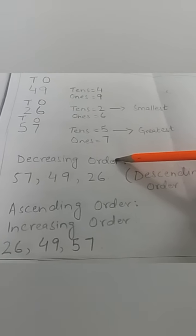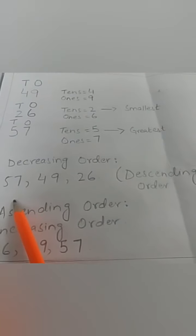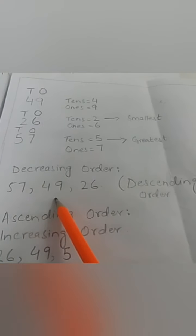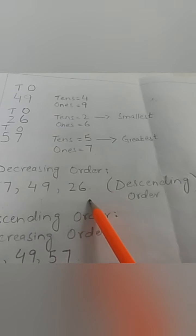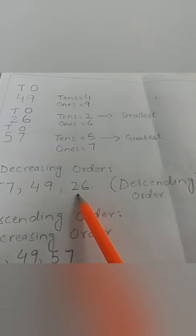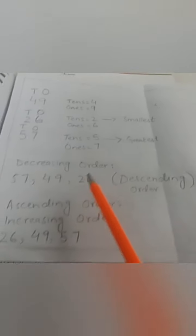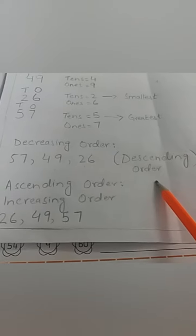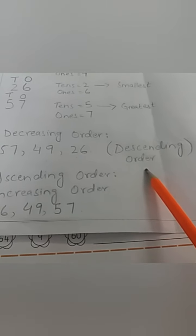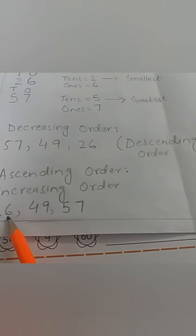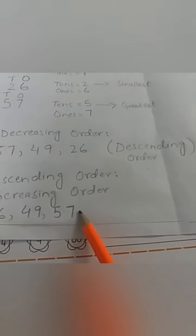Now we will arrange these numbers. First, we will arrange them in decreasing order. Decreasing order means we will write the greatest numbers in the start. Which one is the greatest number? 57, and then 49, and at last the smallest number 26 because it has the smallest number of tens. This is known as descending order.